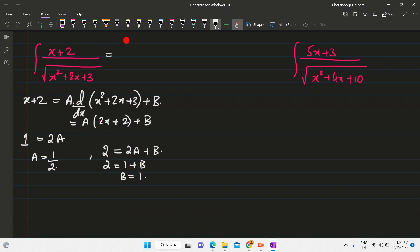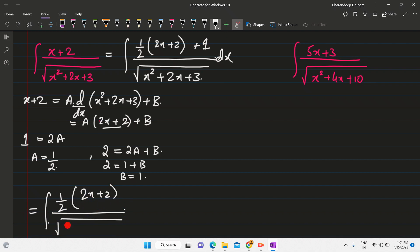Now, in this question, instead of x plus 2, you can write A into 2x plus 2. So that is 1 by 2 into 2x plus 2 plus B, which is 1 upon root of x squared plus 2x plus 3. And the reason we do this is that you can separate this and when you separate, you will get the solution. You will come closer to the solution that is half into 2x plus 2 upon root of x squared plus 2x plus 3 plus you can write 1 upon root of x squared plus 2x plus 3.